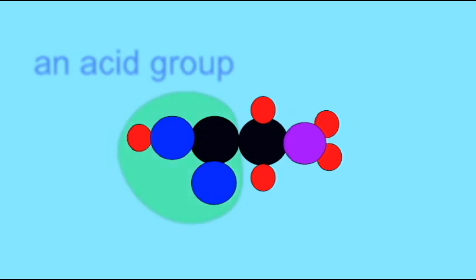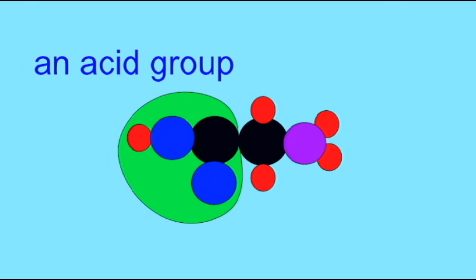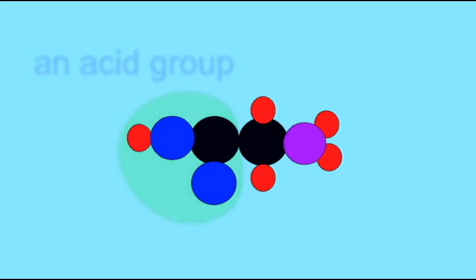In order for an amino acid to be broken down in cell respiration, the amino group is removed and the remaining portion can enter the Krebs cycle.